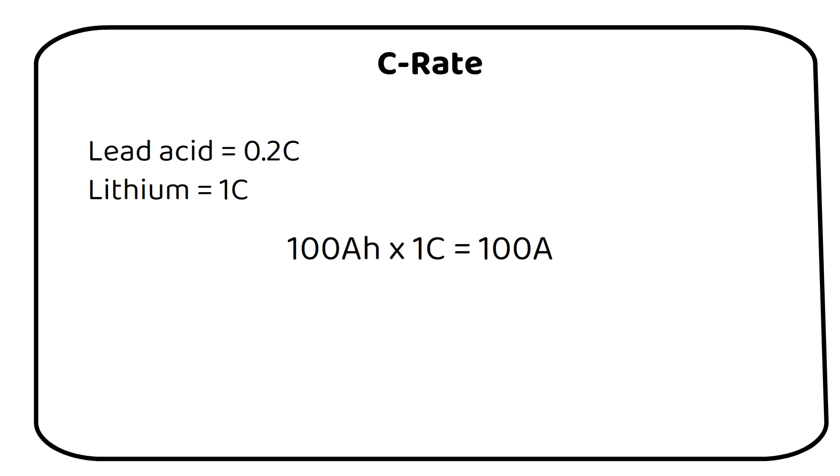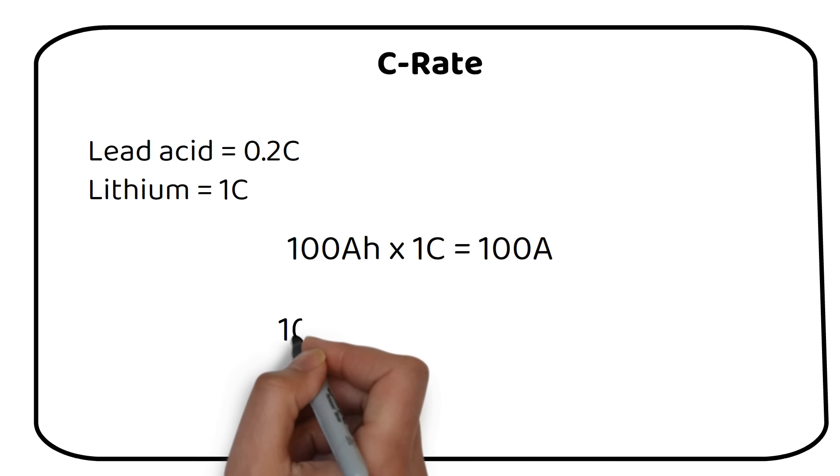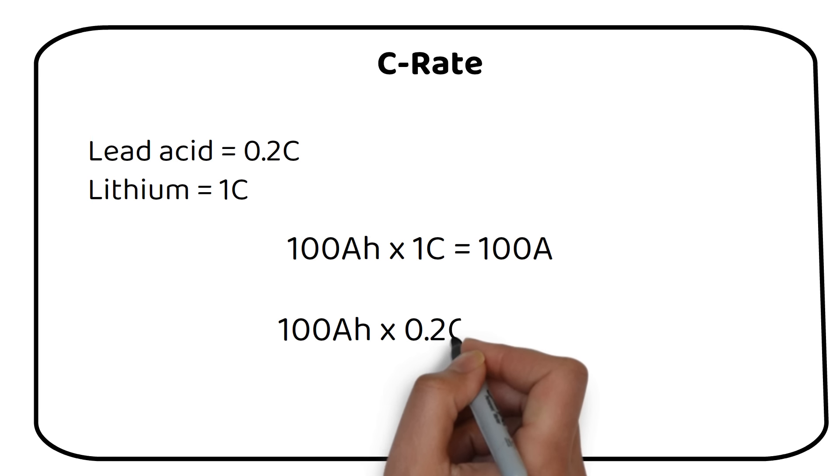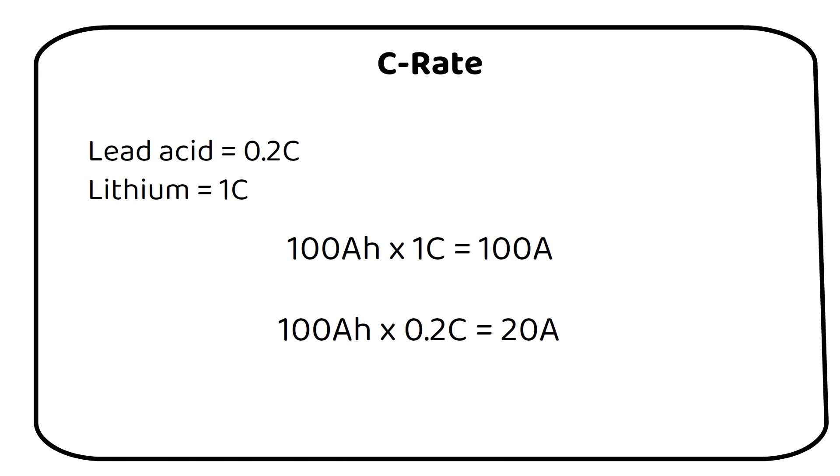Let's repeat the calculation for lead acid. 100 amp hours times 0.2C equals 20 amps. We can see that a lead acid battery can deliver significantly less current. You can still pull 100 amps from a lead acid battery, but the battery won't last very long because heat will be generated and degrade faster. You also wouldn't be able to extract 100 amp hours because a lot of energy is lost in heat.